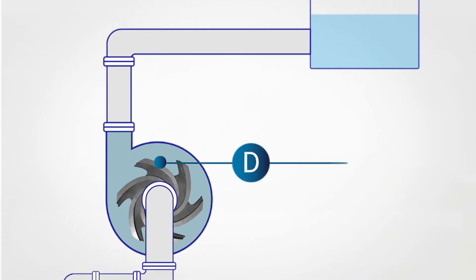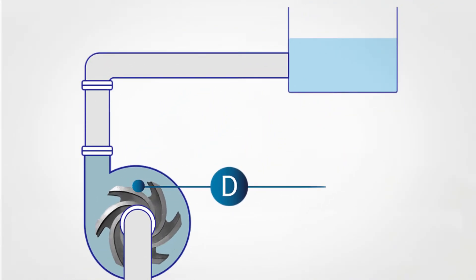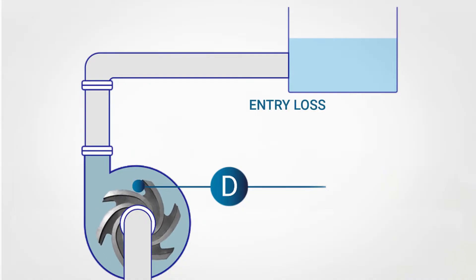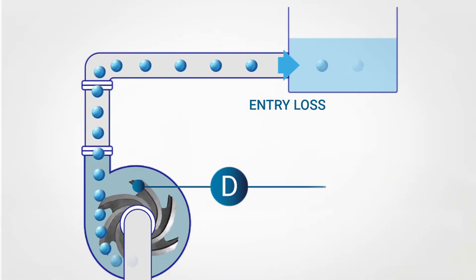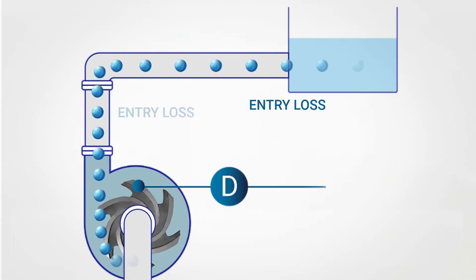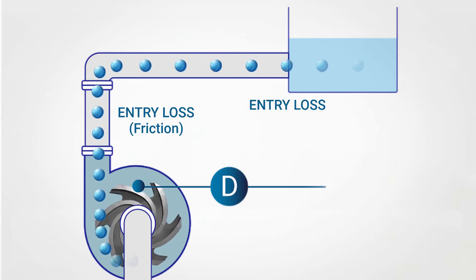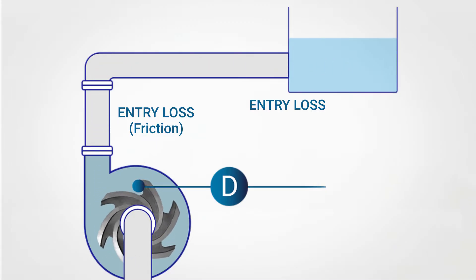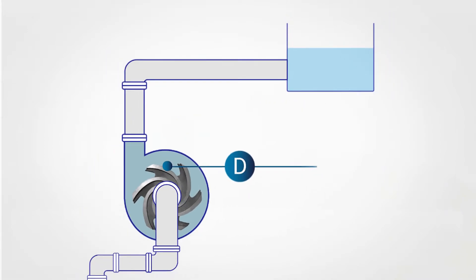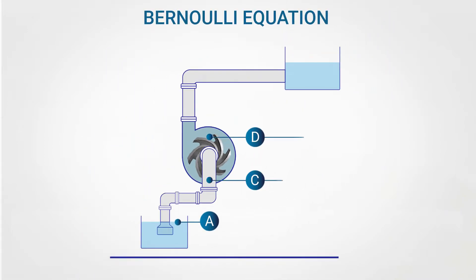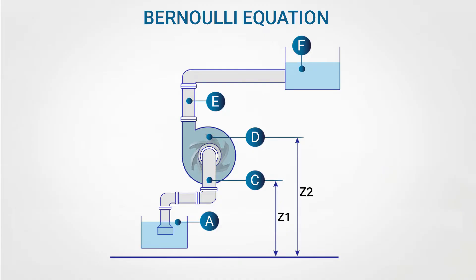The same thing happens during the next phase: there are losses as water enters the upper reservoir, as well as when it leaves the pump and enters the delivery pipe, and additional losses as water flows inside the delivery pipe due to friction. Having identified all these losses, we can apply the Bernoulli equation to explain in detail the different phases of water movement.